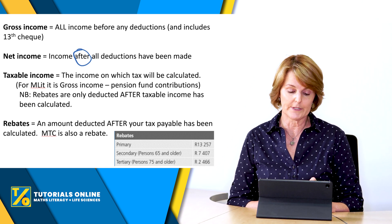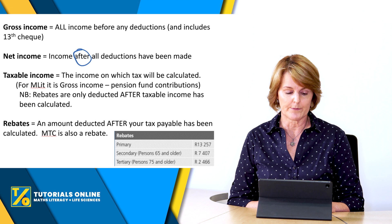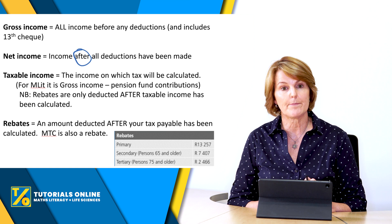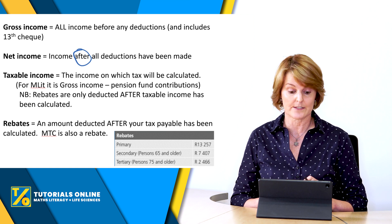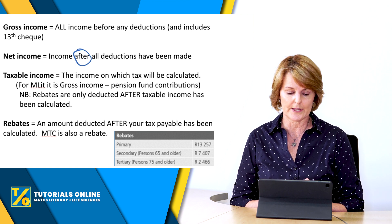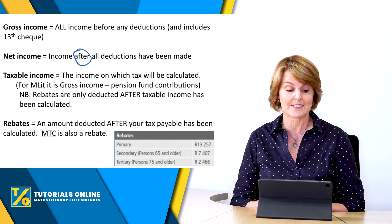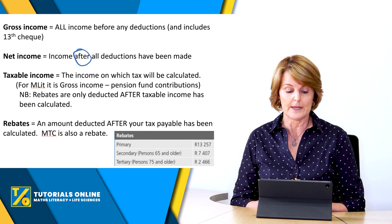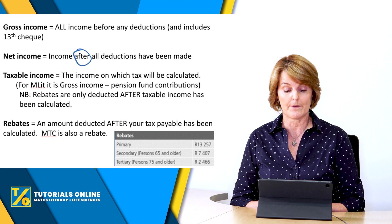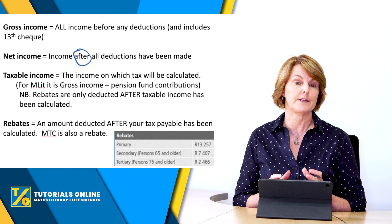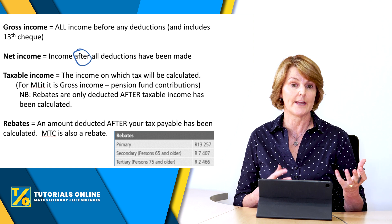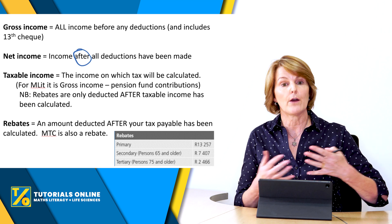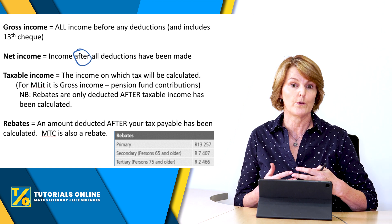Taxable income is a bit different. After you get your money, there are certain deductions that happen and then there's an amount that is taxable. The definition is: the income on which tax is calculated. For maths literacy, your gross income minus your pension fund is your taxable income. In my next video on tax where I explain the tax table, you will see what order to do all of that in.